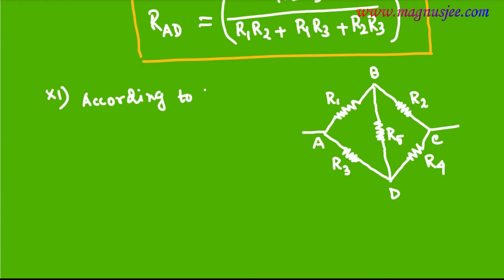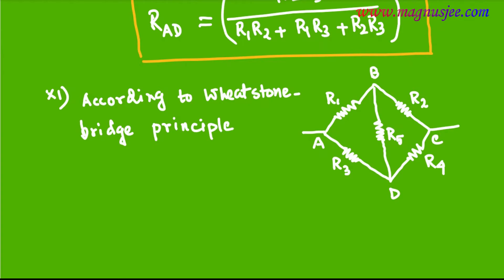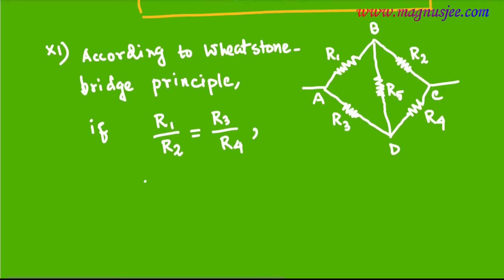According to Wheatstone Bridge principle, if R1 by R2 equals R3 by R4 — that is, the ratio of resistances above the middle resistance R5 is equal to the ratio of resistances below the middle resistance R5 — then VB will be equal to VD. That means the potential at points B and D will be the same.